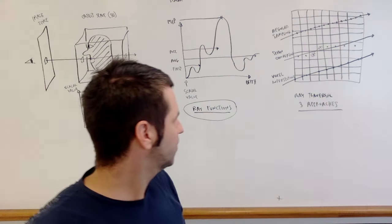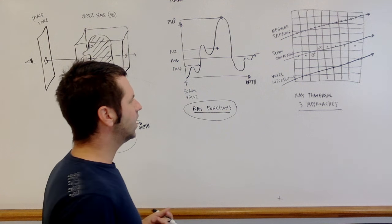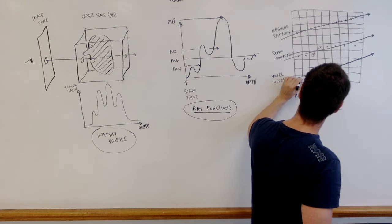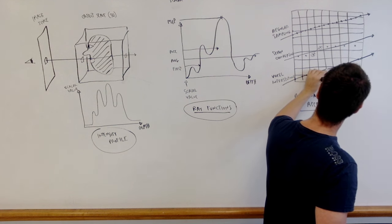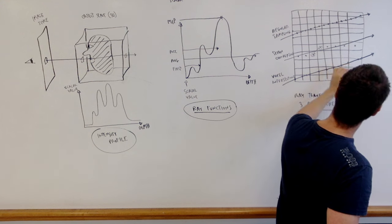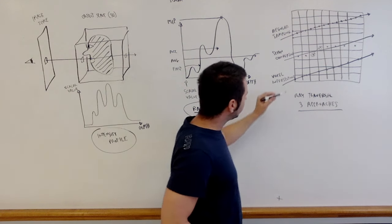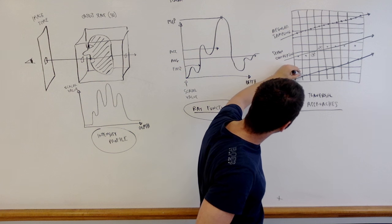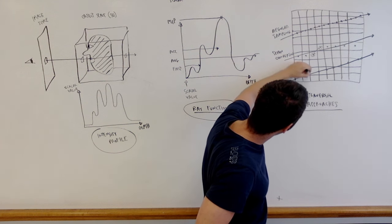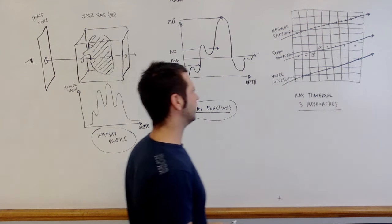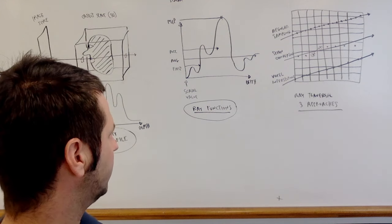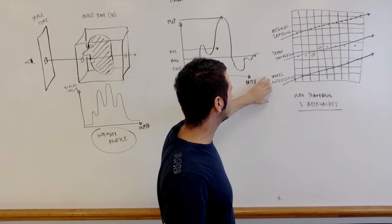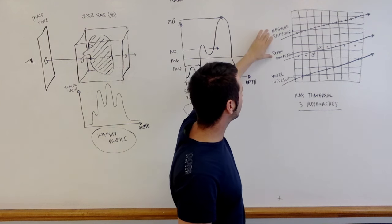And then the voxel intersections ray traversal sampling approach tries to strike a balance between these two. So it samples the volume at all of the voxel intersections. Every time the ray hits an edge of a voxel, it samples the data. And the idea is that the interpolation is simpler. In two dimensions, it's one linear interpolation. So one linear interpolation along this edge, one linear interpolation along this edge, one along this edge, one along this edge, and so on. So that's basically trying to strike a balance between computation time and accuracy. It's like almost a cross between these two. It's a middle ground between these two.